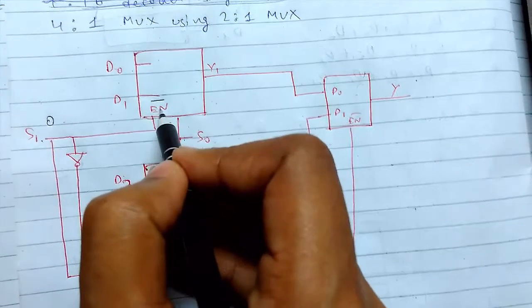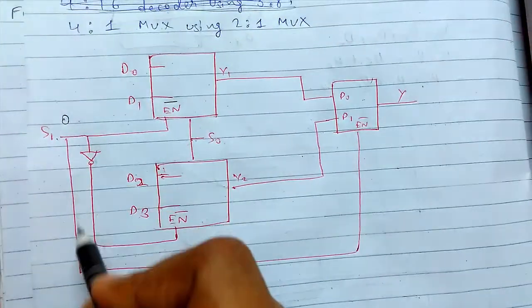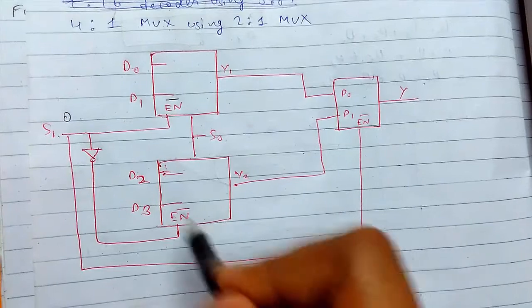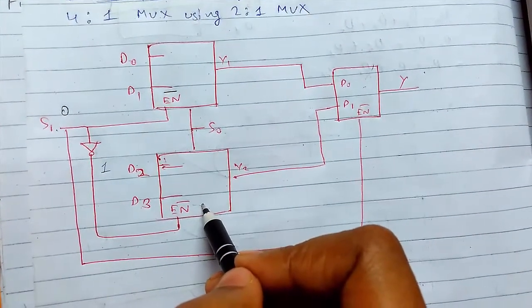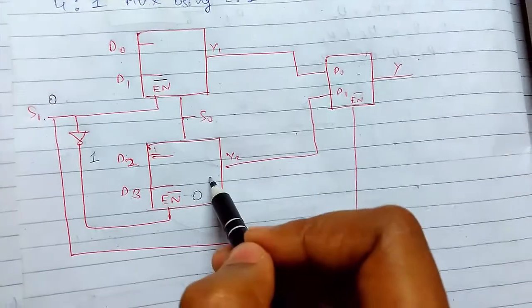Since it is an enable bar, it will become 1, and it will become 1, so it will become 0. It will pass the OR gate, it will become 1, then it will again be inverted, so it will become 0. It will not be activated.